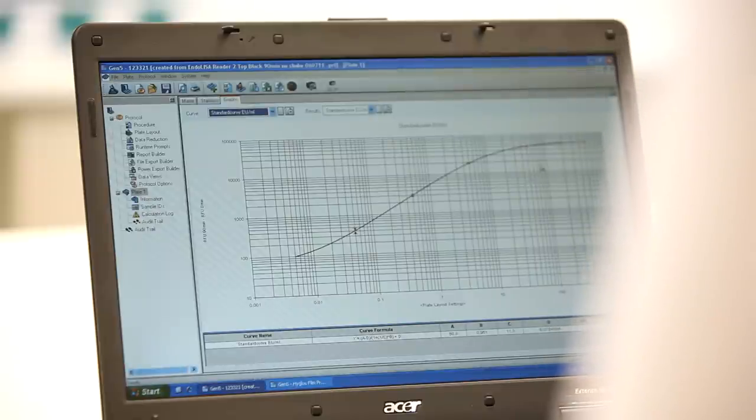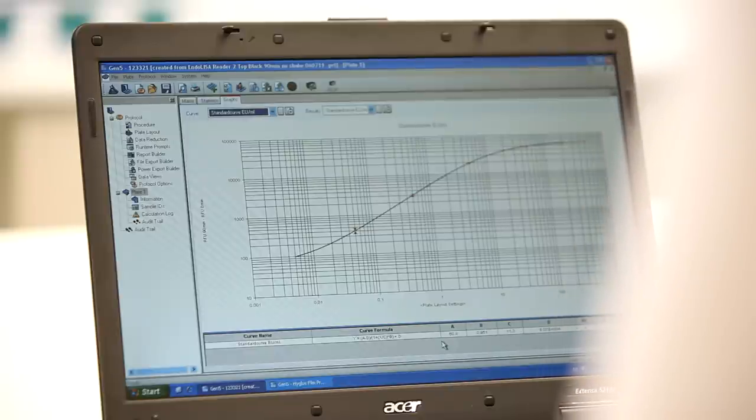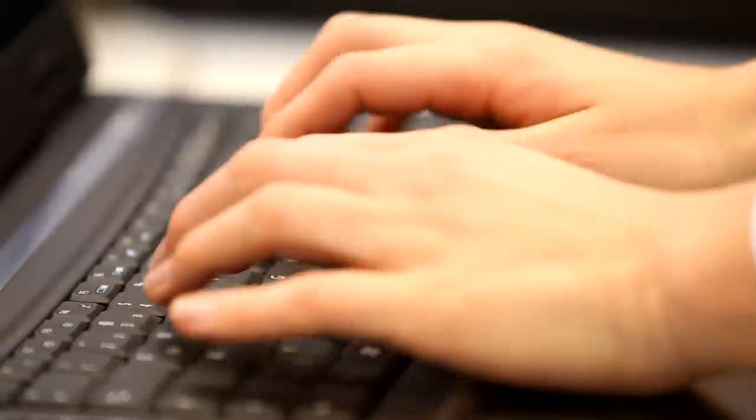Using calculation software such as Gen5, the endotoxin concentration is determined by standard curve analysis. A four-parameter logistic function is recommended for modeling the EndoLISA standard curve. Alternatively, a linear model can be used.